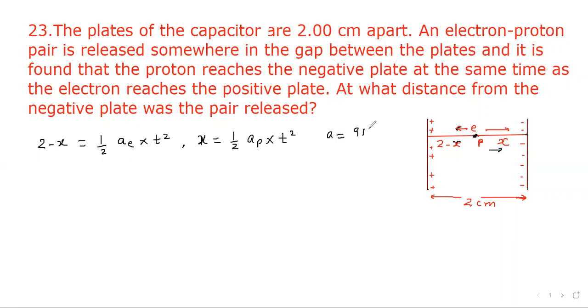Acceleration can be given as qE upon m. Now we divide the two. 2 minus x divided by x will be equal to a_e divided by a_p.